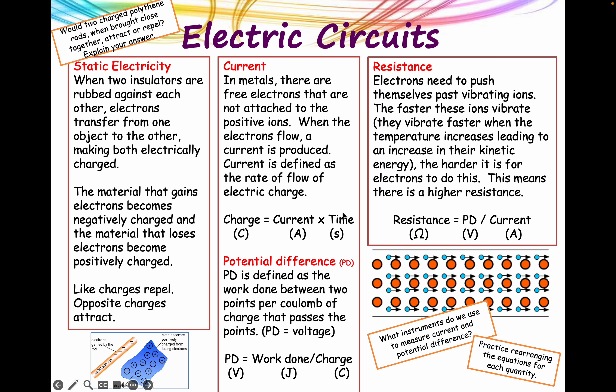Starting off with static electricity. If you rub a cloth with a polythene rod, electrons transfer from the cloth to the polythene rod. And because the polythene rod is an insulator, any electrons that it gains remain on its surface, so you've basically produced a static electrical charge. The polythene becomes negative, and the cloth that lost the electrons became positive, because it's got fewer electrons.